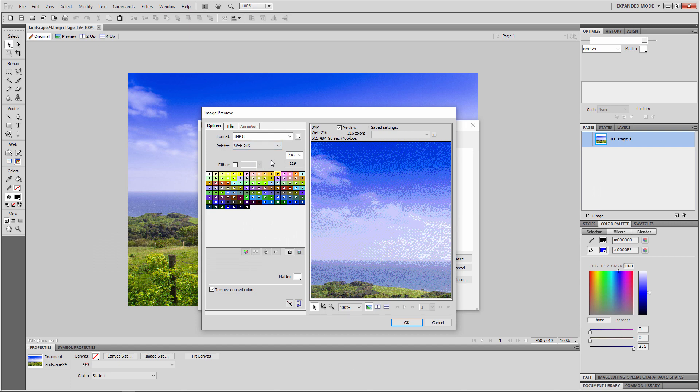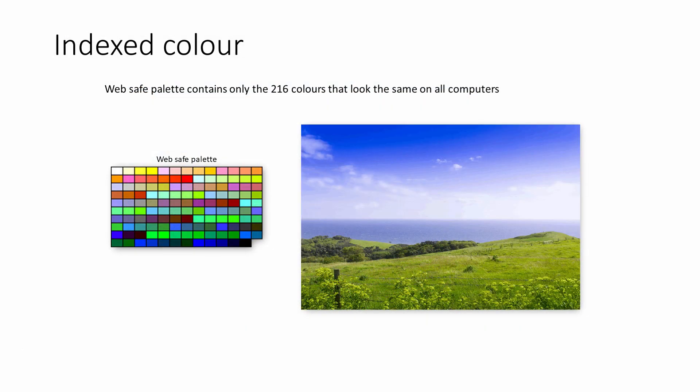However, when you take an image containing millions or even thousands of colours and re-save it with a much smaller set of colours to choose from, you're bound to lose some of the colour information. The re-saved image can't possibly look as good as the original. In an attempt to maintain the quality of the image, the image editing software can apply a process known as dithering. This is also called colour quantisation.